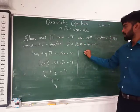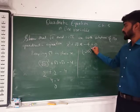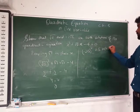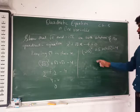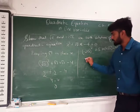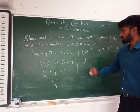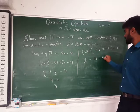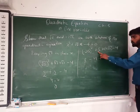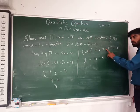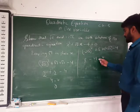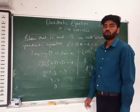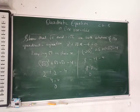Now we check x = minus 2 root 2. Substituting: (minus 2 root 2)² + root 2 times (minus 2 root 2) minus 4. (minus 2 root 2)² equals 8. Then minus 2 times root 2 times root 2 gives minus 4, and minus 4. So we get 8 minus 4 minus 4 = 0. Since we're getting 0, minus 2 root 2 is also a root of this quadratic equation.